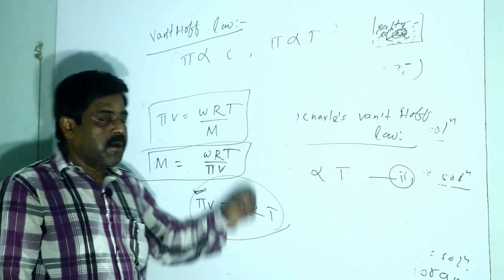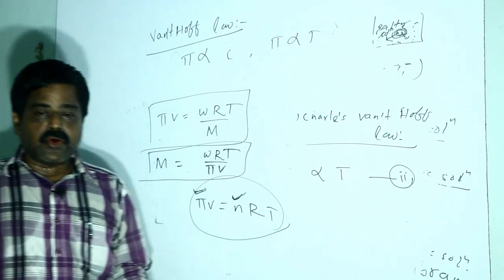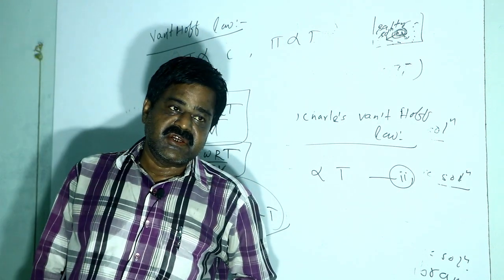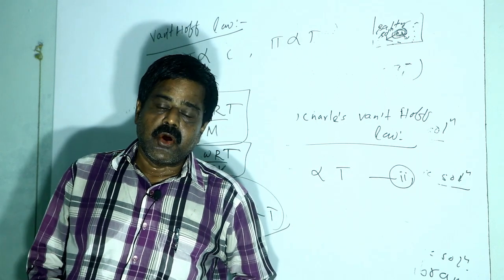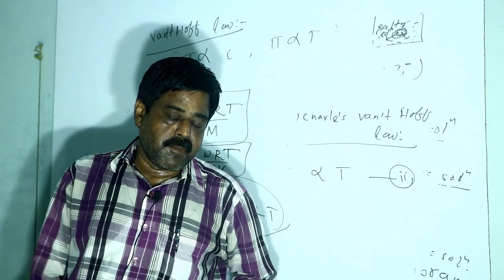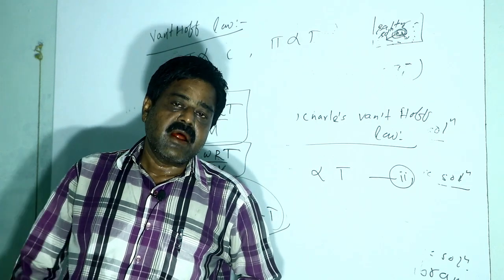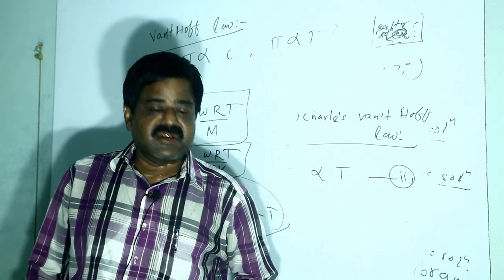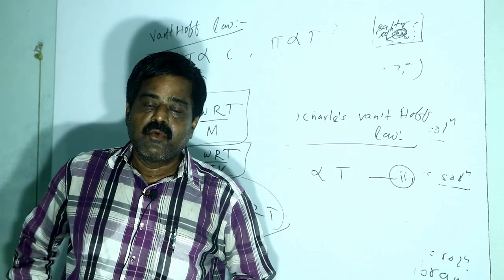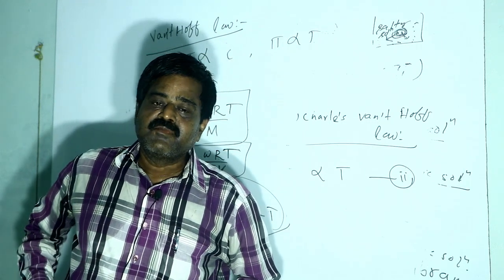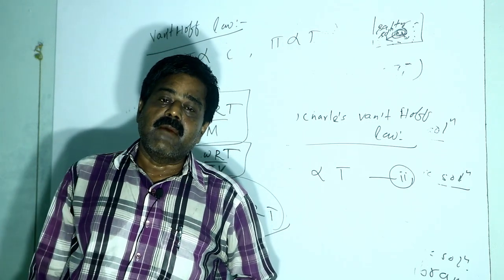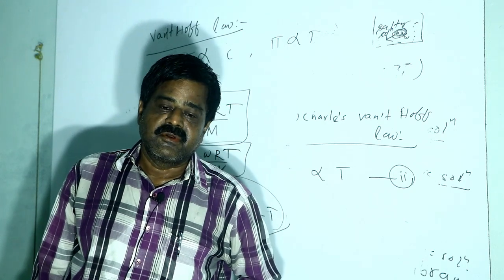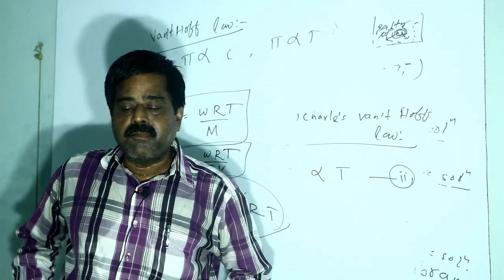This is about osmotic pressure and its correlation with colligative property, and how to determine molecular mass from osmotic pressure data. In the next class, we will discuss the abnormal colligative properties of dilute solutions. Thank you.